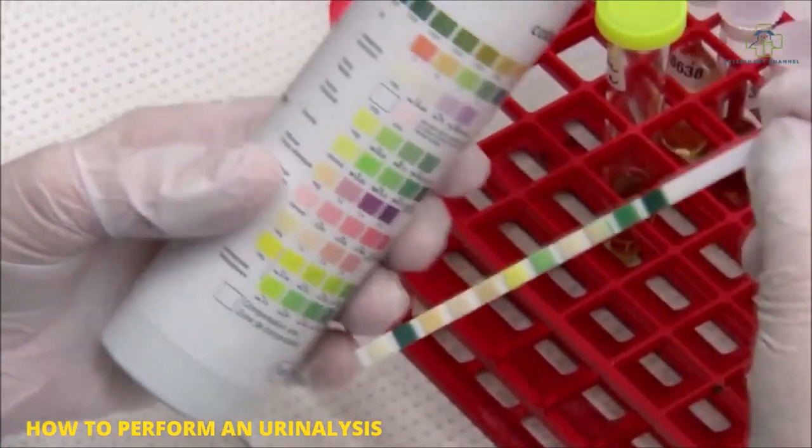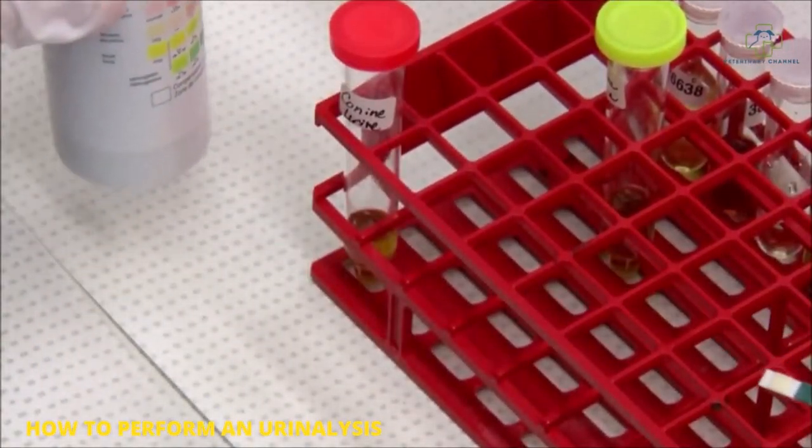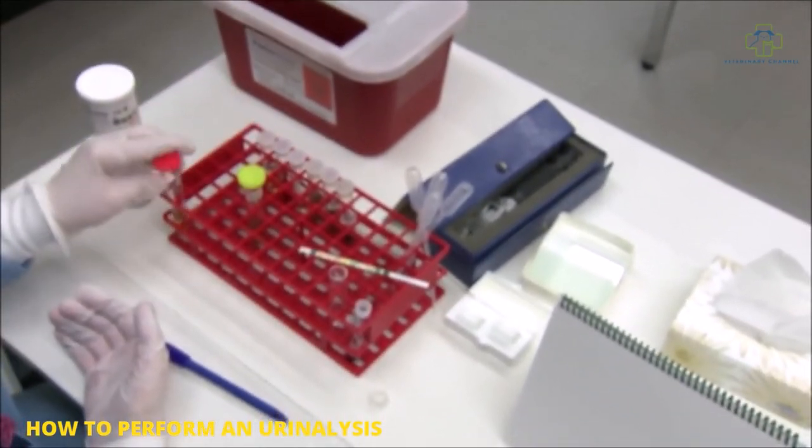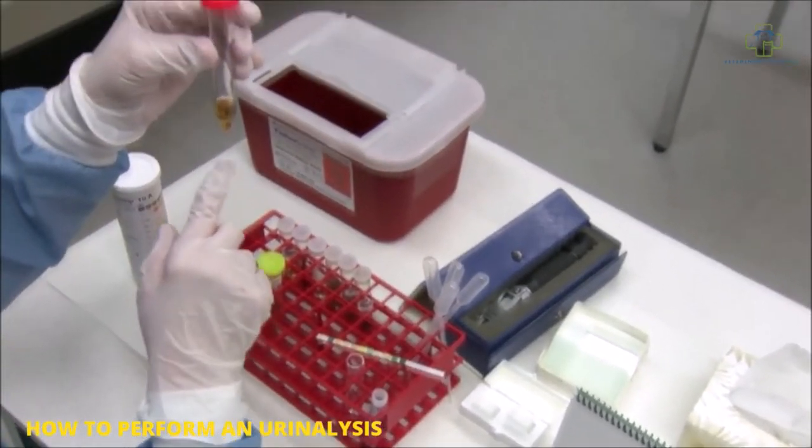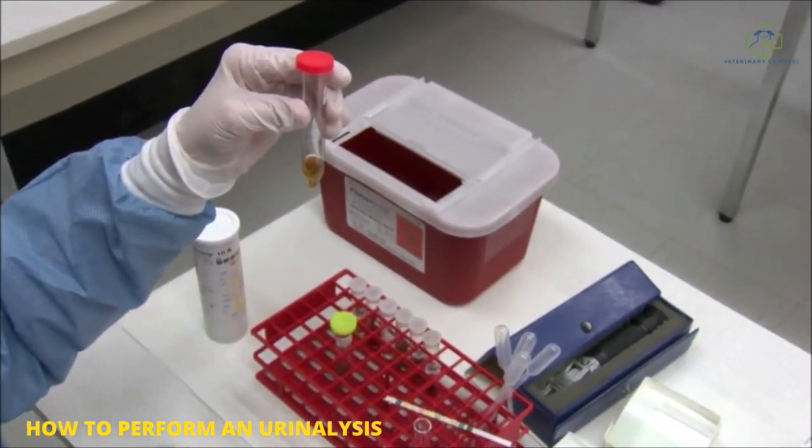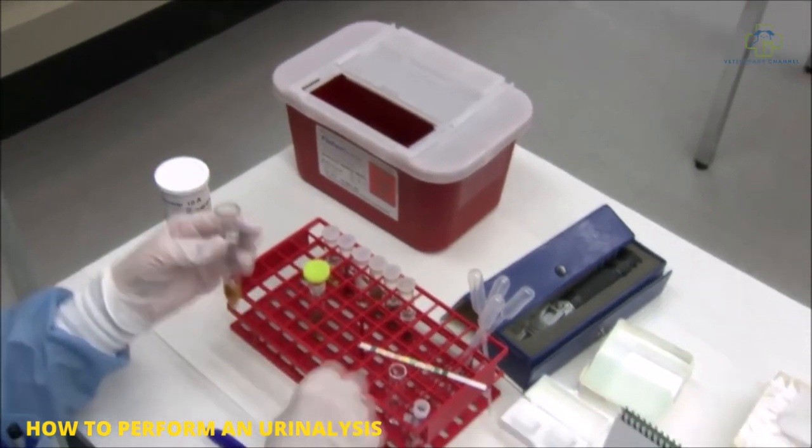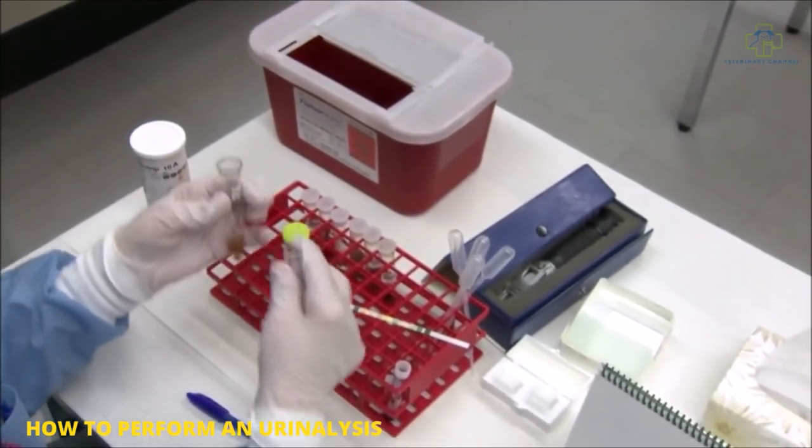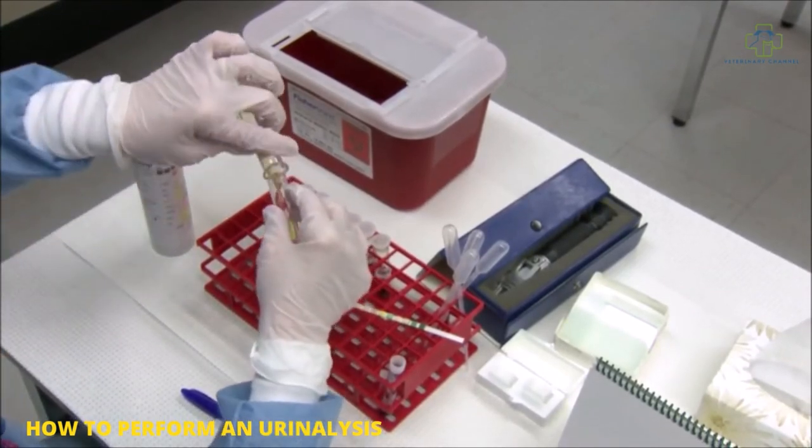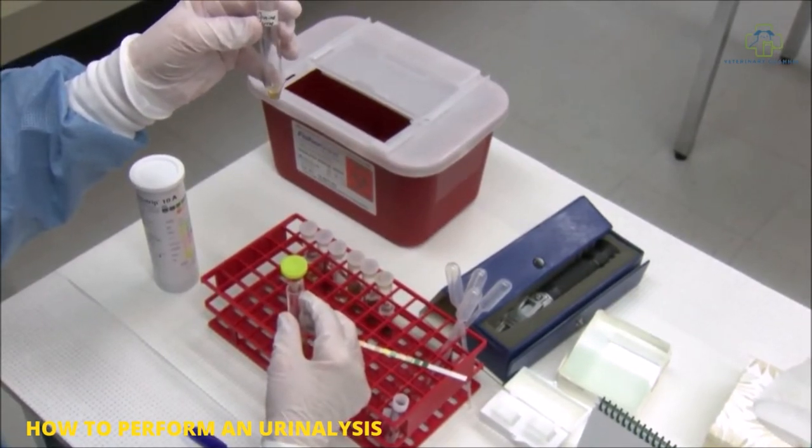After you're done with your strip and your appearances, you want to centrifuge your urine at 1500 rpm for five minutes. You can see there's some sediment at the very bottom of this tube. Once you have your urine centrifuged, you want to pour off the supernatant in just one quick tilt forward and tilt back. The tubes are shaped to leave the correct amount at the bottom for your sediment.